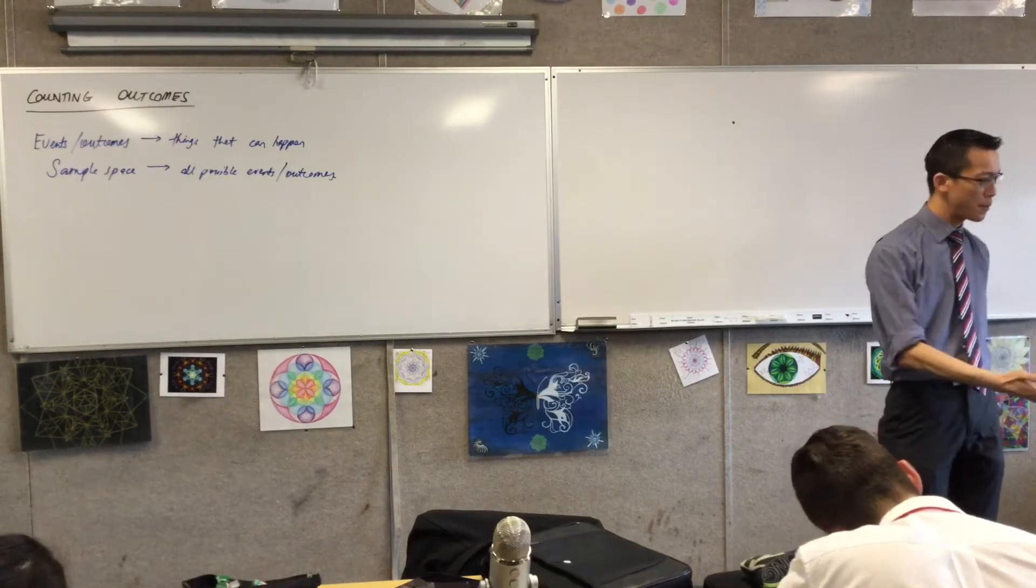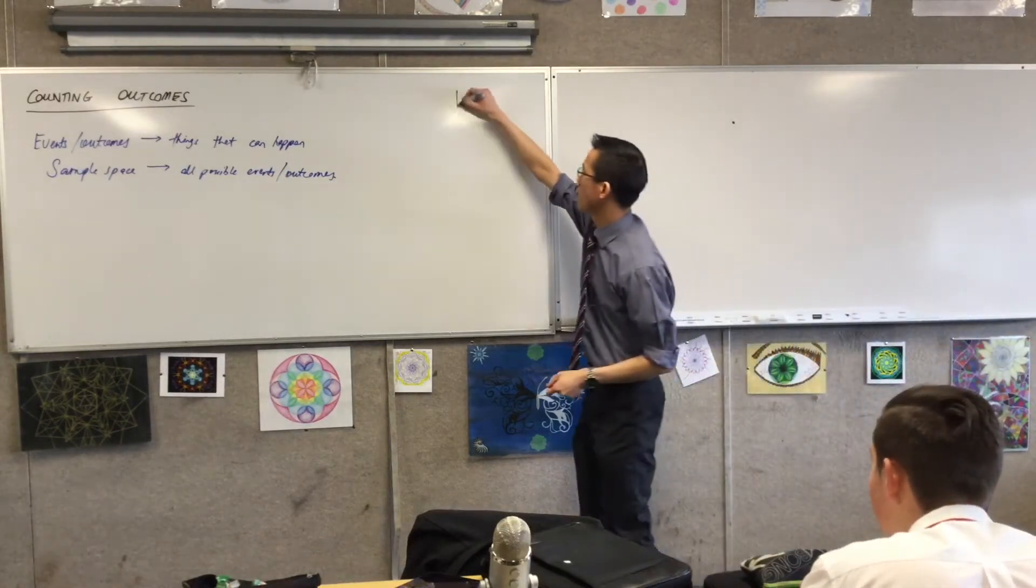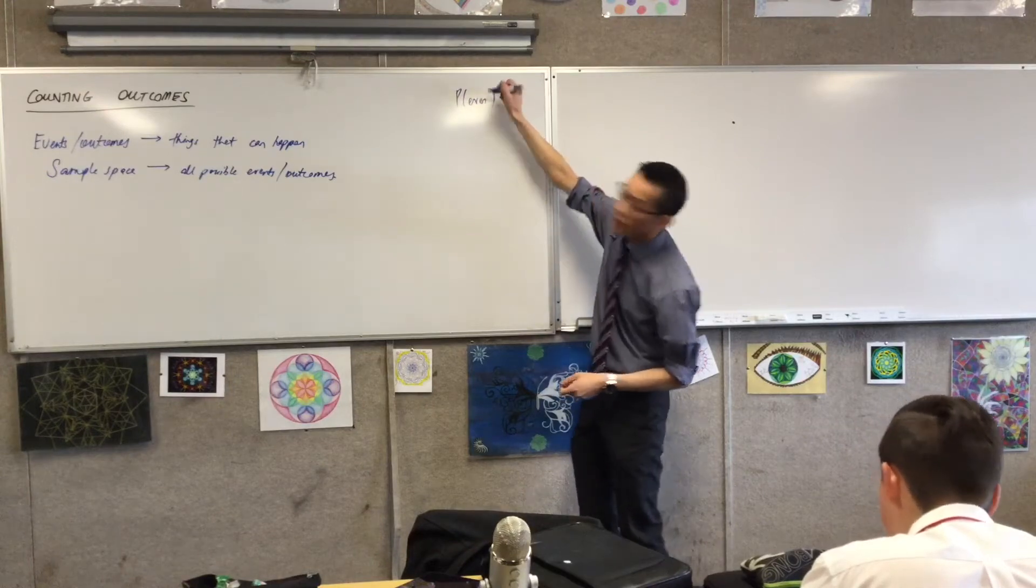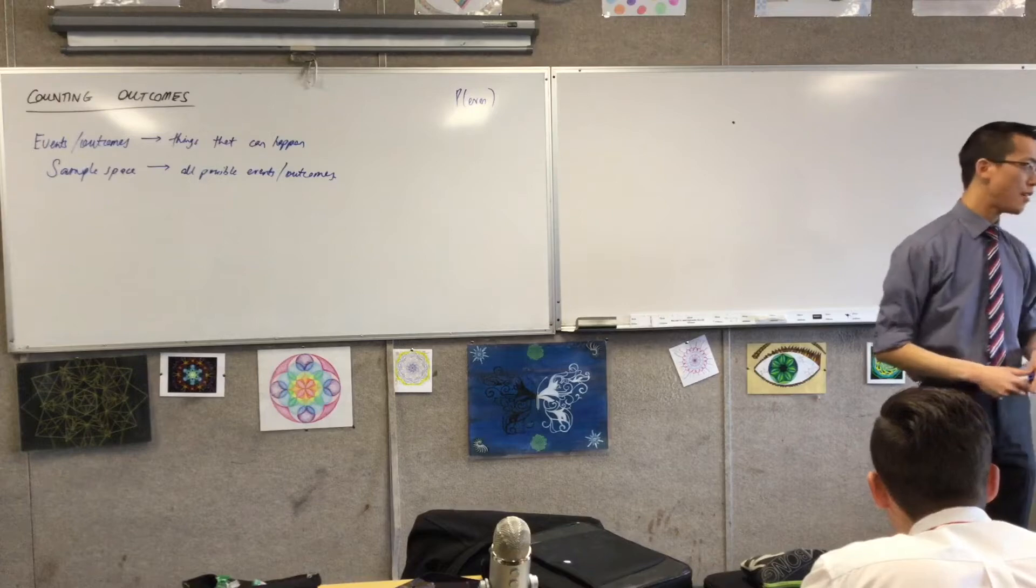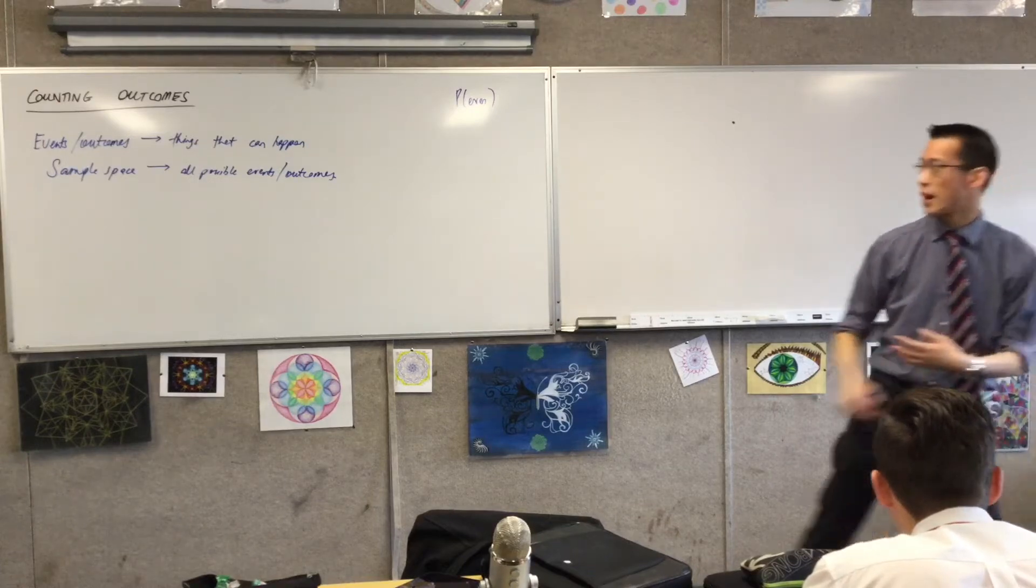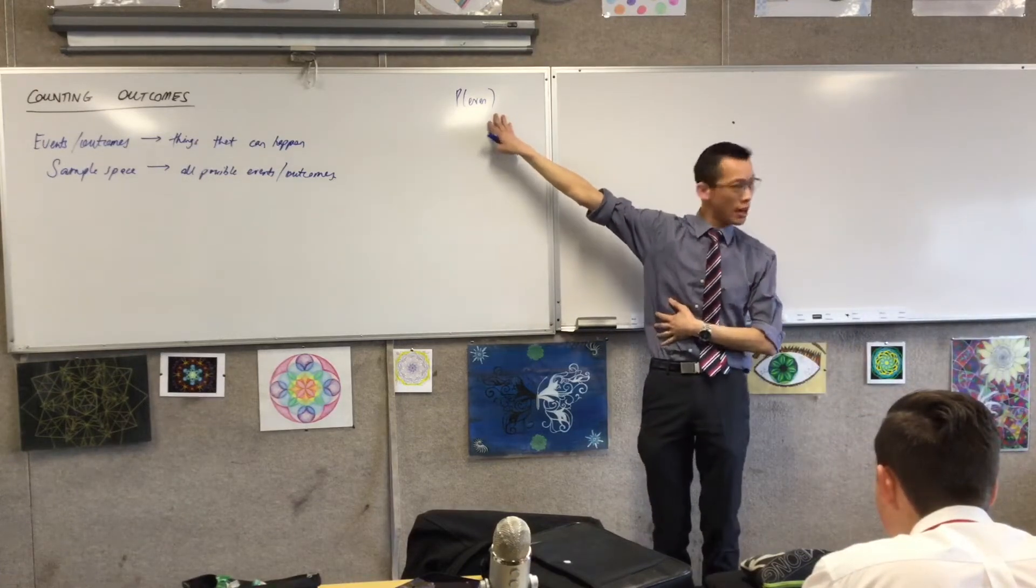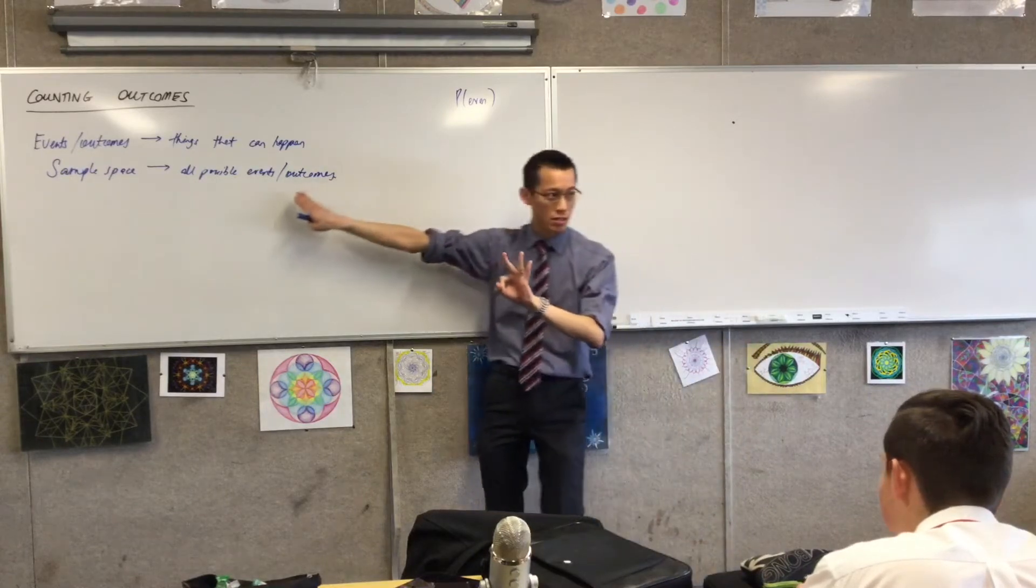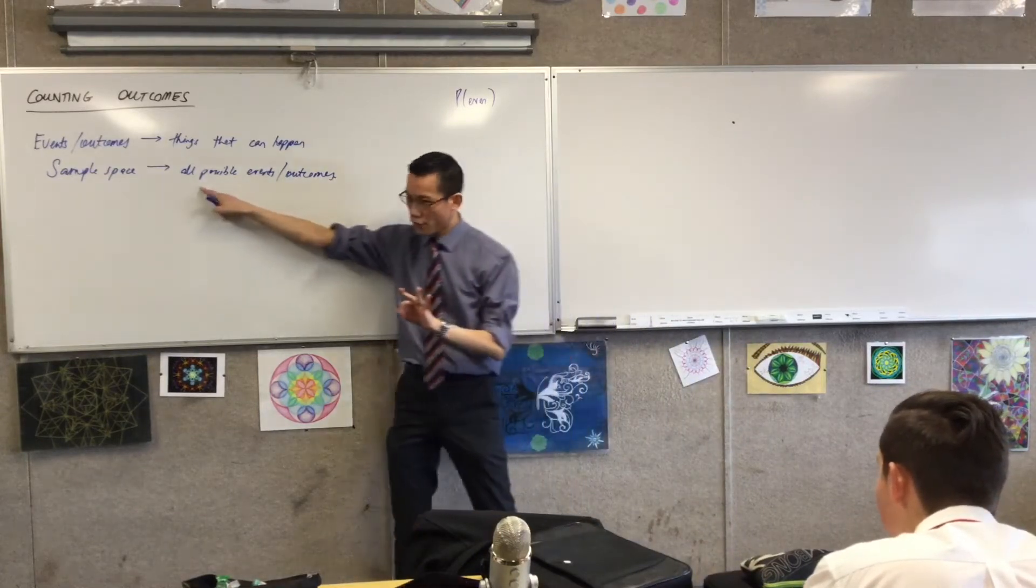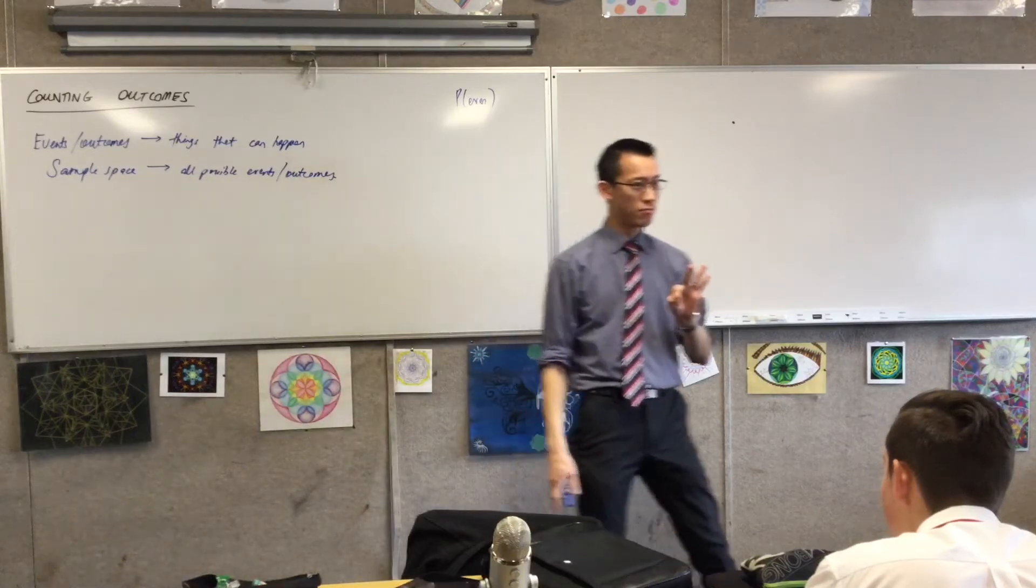So, for instance, the probability of rolling an even number on a die, right? You roll the dice, how many favorable events or outcomes are there? How many even numbers are there on the die? Three. And then you think about the sample space. All the possible events, of which there are six.